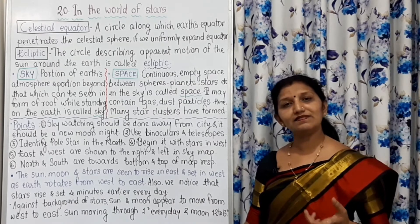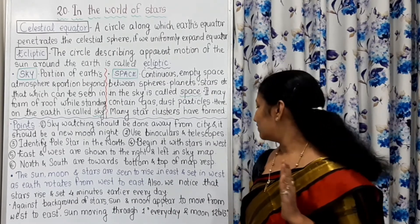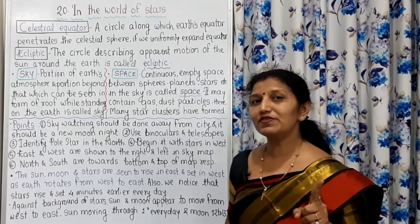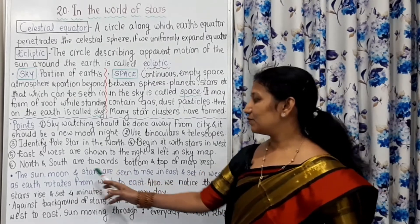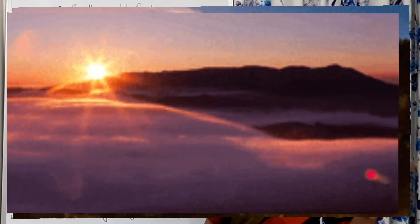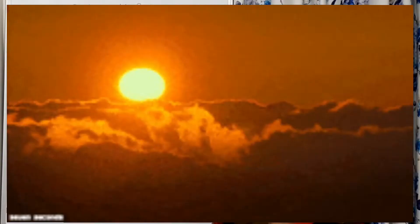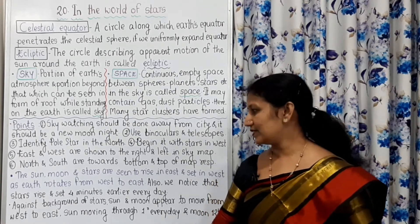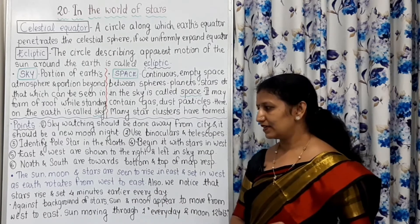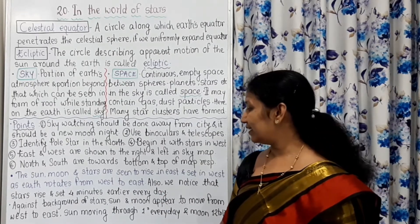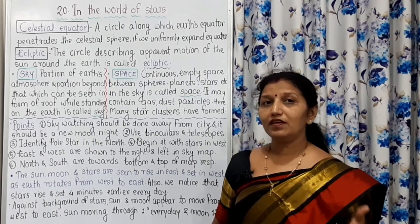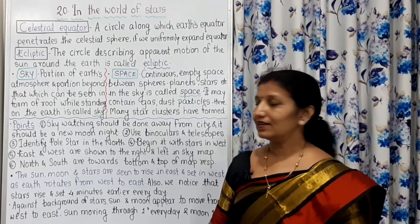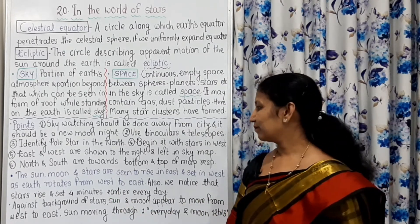This is because the Earth moves from west to east. So the sun rises in the east and sets in the west, and similarly the moon and stars also appear to rise from the east and set in the west. We also notice that stars rise four minutes earlier every day — for example, if stars rise at 8:00 PM, the next day they will rise at 7:56 PM.